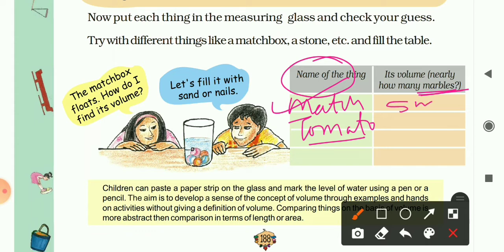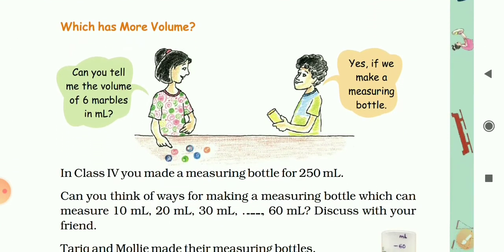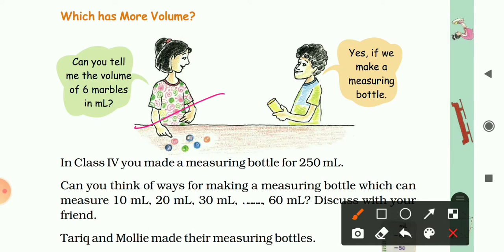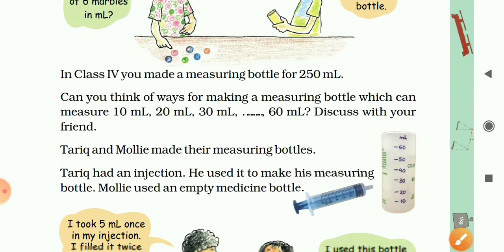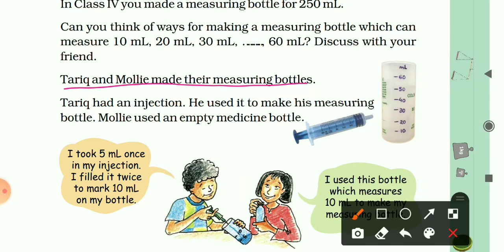The second topic is 'which has more volume.' Sarika asks: can you tell me the volume of six marbles in millilitres? The boy says yes, if we make a measuring bottle - similar to what we did in Class 4. Tariq had a syringe with a capacity of 5 ml and used it to make his measuring bottle. Molly used an empty medicine bottle to make hers.